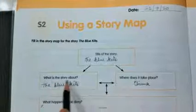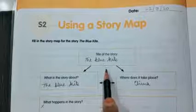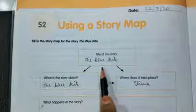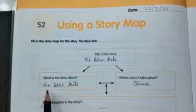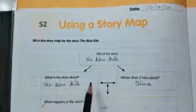What is this story about? The title if we see, the blue kite is there. Means the story is about the blue kite only. So I have written the blue kite. The story is based on this blue kite.